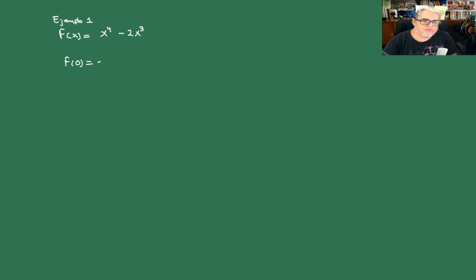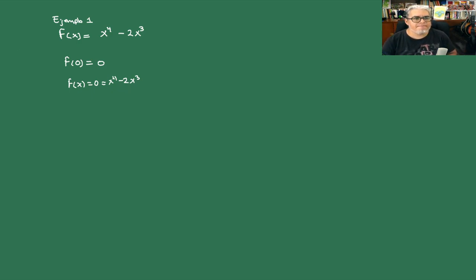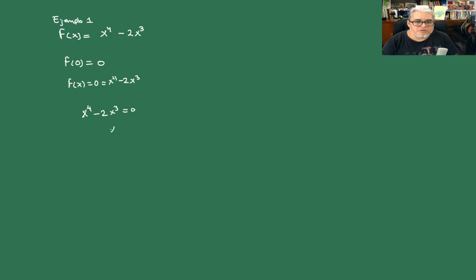Determinamos cuándo f(x) es 0: x⁴ - 2x³ = 0, lo que significa que x⁴ = 2x³. O bien x es igual a 0,